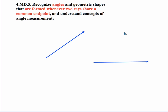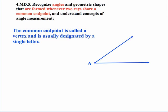Angles are formed whenever two rays share a common endpoint. So if we had two rays such as we have here and we put them together to where they have a common endpoint, now we have an angle.